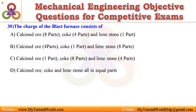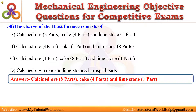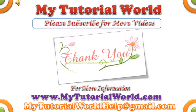Answer is: Calcine ore eight parts, coke four parts, and limestone one part. If you like it, please share and subscribe for more videos.